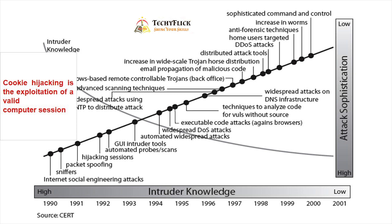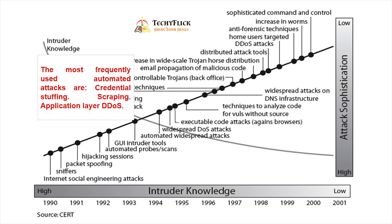Next, automated probes or scans. When we open the internet and suddenly there is a message like 'scan your computer' or similar messages, if we click on that we can get hacked. In 1992 to 1993, GUI intrusion tools — graphical user interface tools — appeared. If we click on images, hackers can get into our system, making hacking easier. That also relates to credential stuffing, where if we save passwords in Chrome or the browser, those details can be scraped — that is credential stuffing, a frequently used attack.